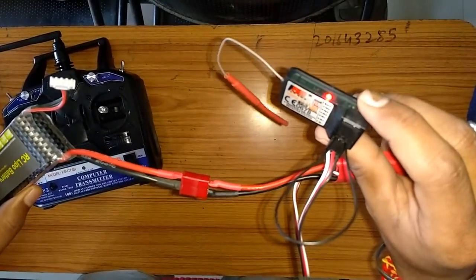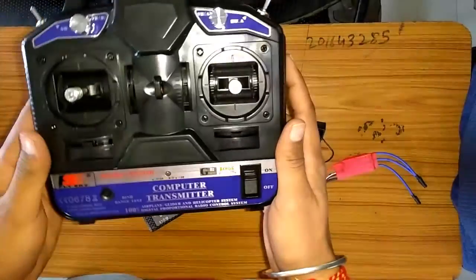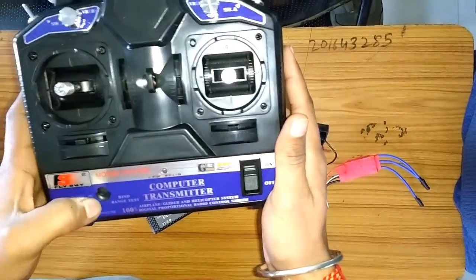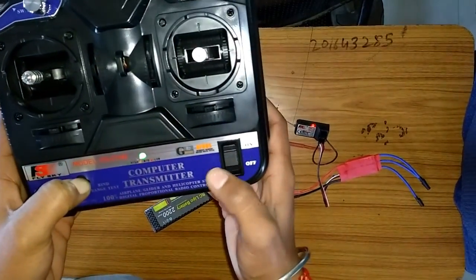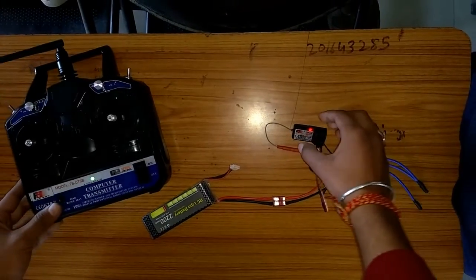Now take your transmitter and press the bind button. While pressing the bind button, switch on the transmitter. You can see that the receiver LED light stops blinking, which means it is now bound with the transmitter and the binding process is done.